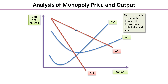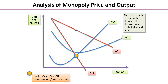We use the profit maximizing condition, which is where marginal cost equals marginal revenue. We find the spot where MC equals MR, and that gives us the profit maximizing output. Only be tempted to go down to the output axis and write Q1, or Q star, or profit maximizing output.